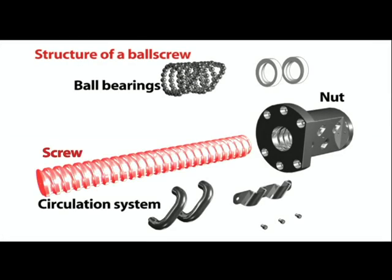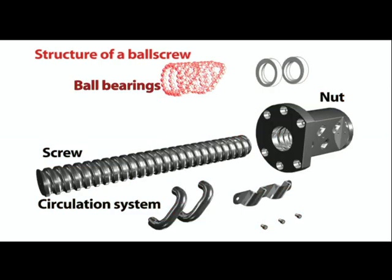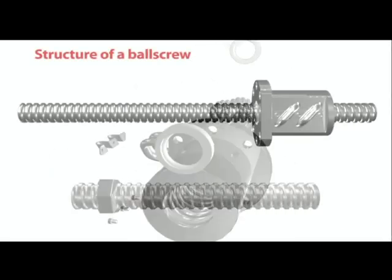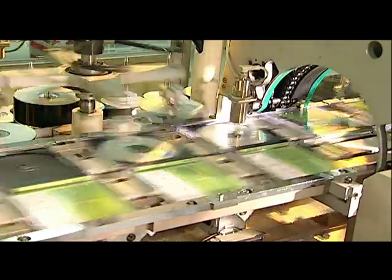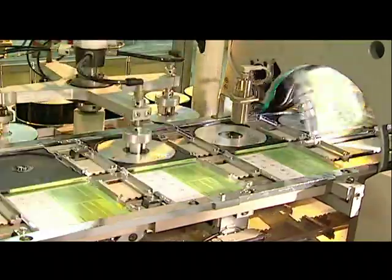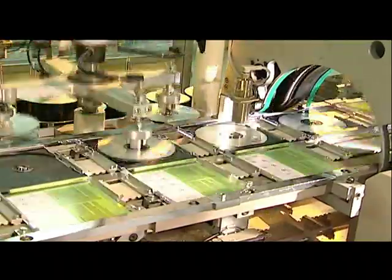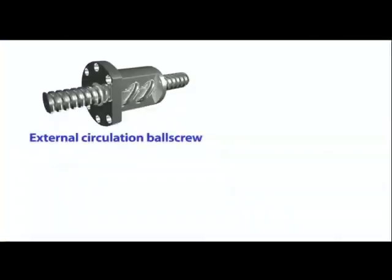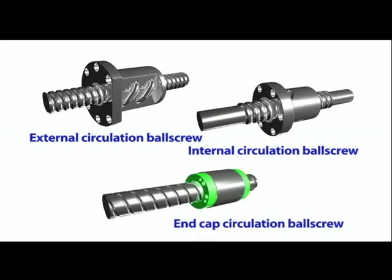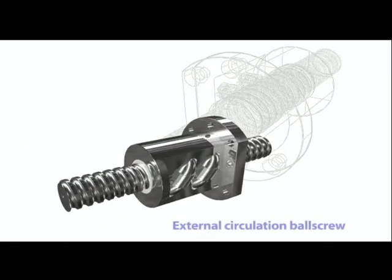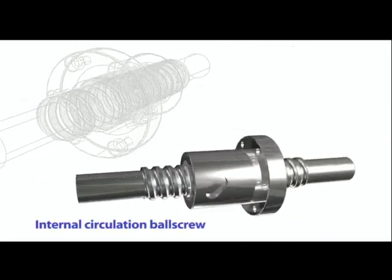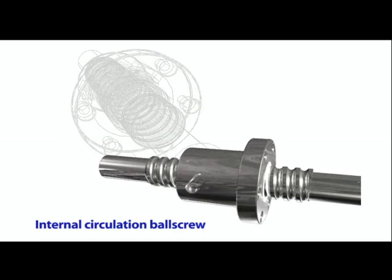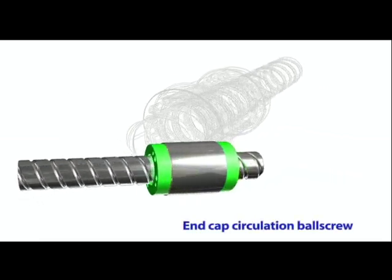Ball screws are composed of screws, nuts, a recirculation system, and ball bearings. They are low friction transmission elements that can be used to convert rotational motion to linear motion, or to convert torque to axial reciprocating action. There are three types of ball screws, which differ in how their ball bearings circulate: external circulation ball screws, internal circulation ball screws, and end cap circulation ball screws.